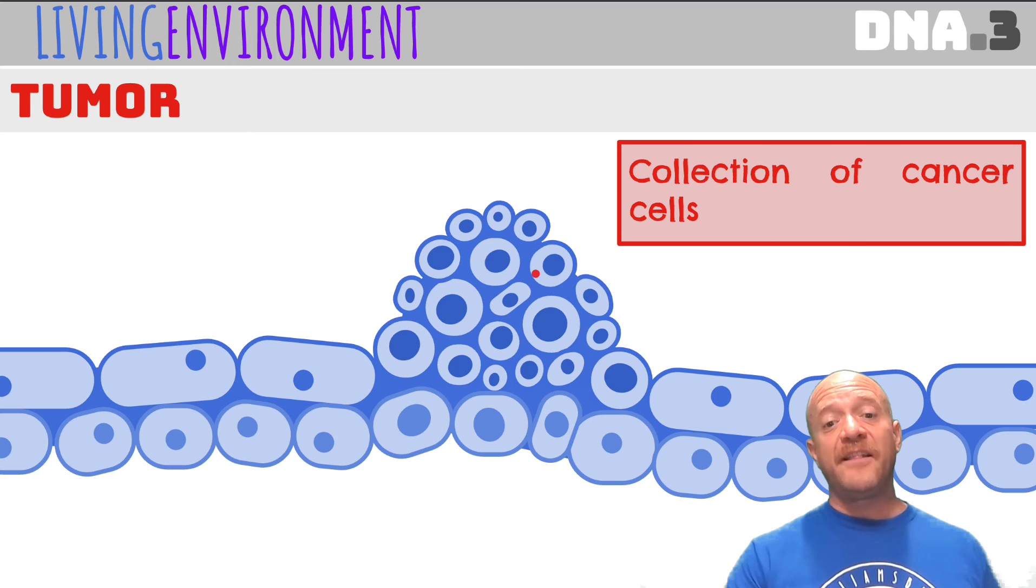Now, a tumor is just a collection of cancer cells. Tumors can be removed by surgery. And if you get rid of all of the cancerous cells, then you've cured yourself of the cancer. However, it's not always possible to get rid of everyone or it is advanced to a later stage where it has spread to other parts of the body. And then curing the cancer is really, really, really difficult.